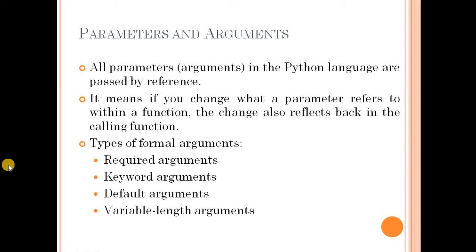We have an example. There are four types of formal arguments in Python: required arguments, keyword arguments, default arguments, and variable length arguments.